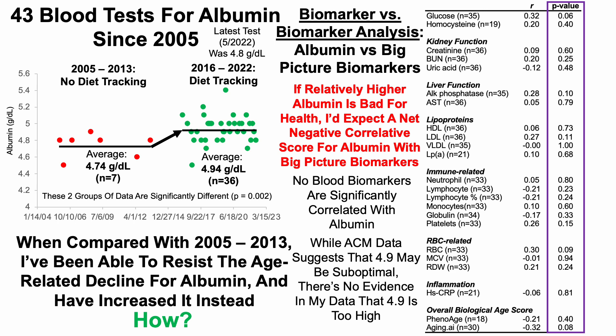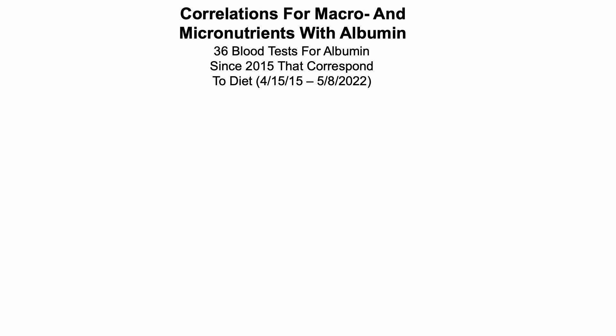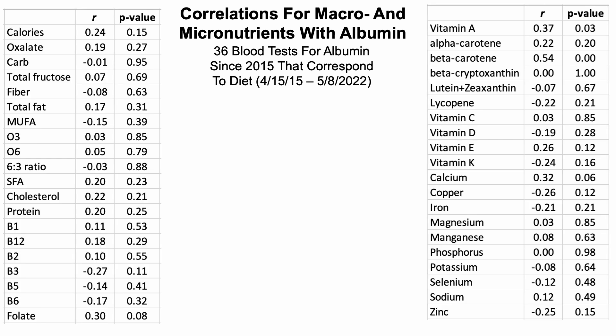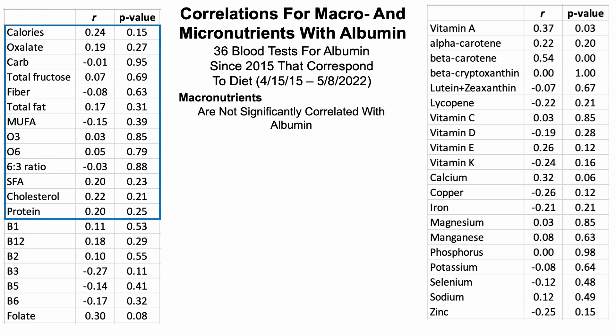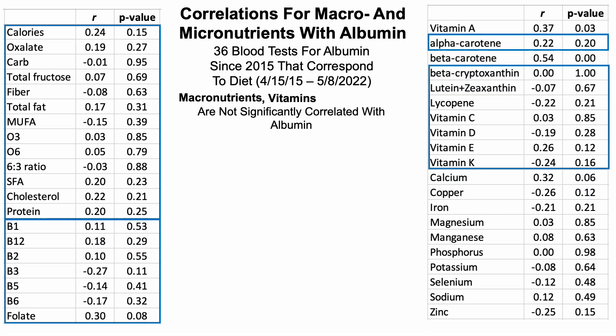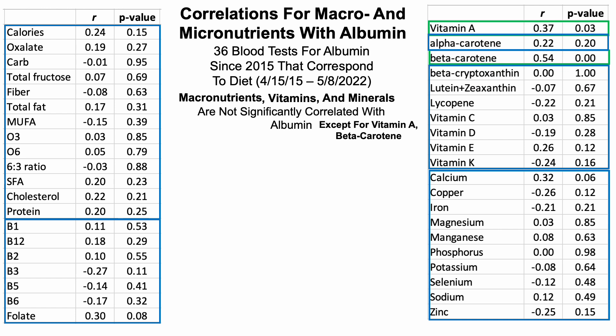I've been able to resist the age-related decline for albumin — but how? I have 36 blood tests for albumin since 2015 that correspond to diet, so I can look at correlations for macro and micronutrients with albumin. Starting with macronutrients, none of them are significantly correlated with albumin. Most vitamins are also not significantly correlated. The only two that are significantly correlated with albumin are vitamin A and beta-carotene. Almost exclusively all of my vitamin A intake comes from carotenoids including beta-carotene, so that significant correlation for vitamin A is likely driven only by beta-carotene.